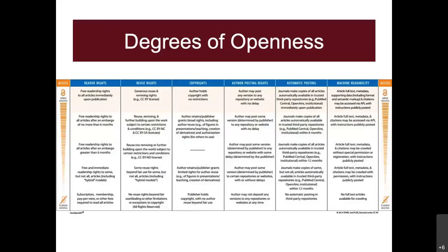This slide shows some of the differences between different kinds of open access. There are many different factors an author or reader has to consider: reader rights, reuse rights, copyrights, machine readability, automatic posting, and so on. Not all open is the same — some things are more open than others.